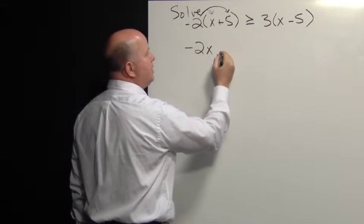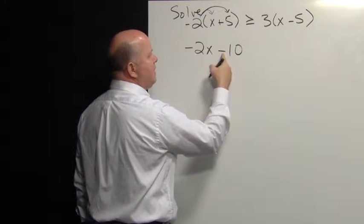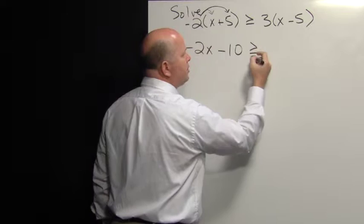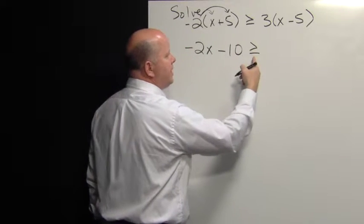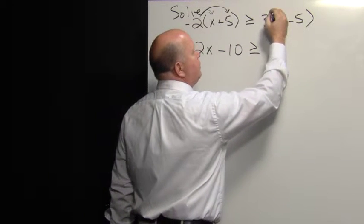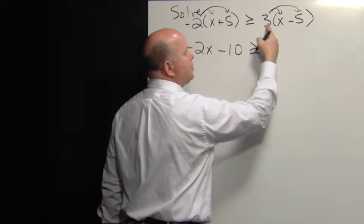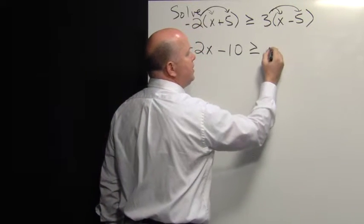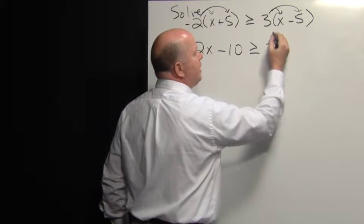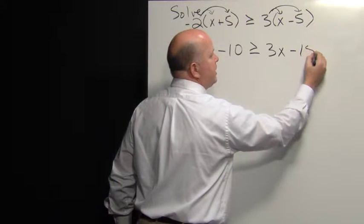Negative two times positive five: negative times a positive is a negative, and two times five is ten. Our sign remains the same for the inequality symbol. The distributive property is required again because this is three times the entire quantity on the right: three times X is three X, and three times negative five is negative 15.